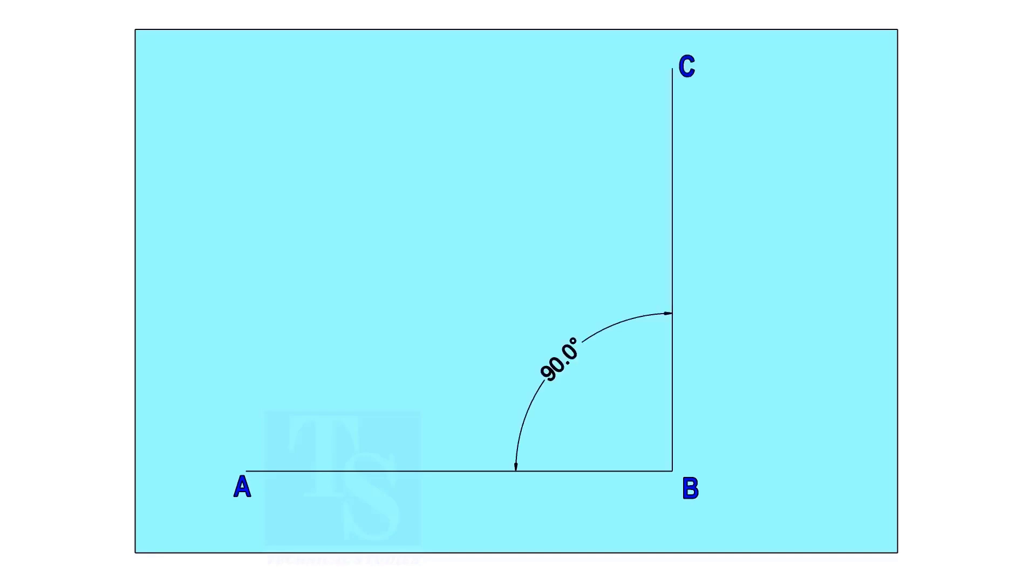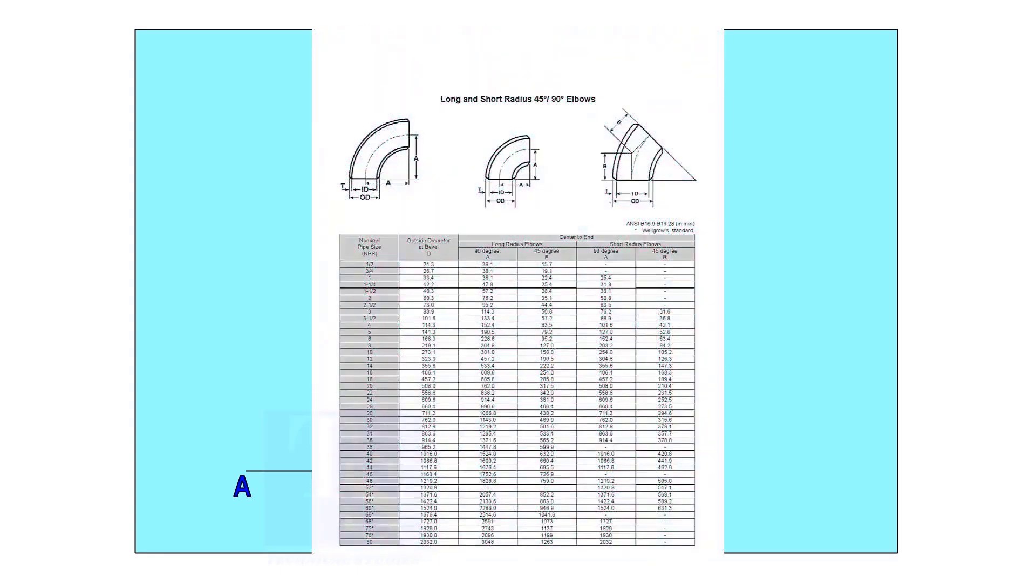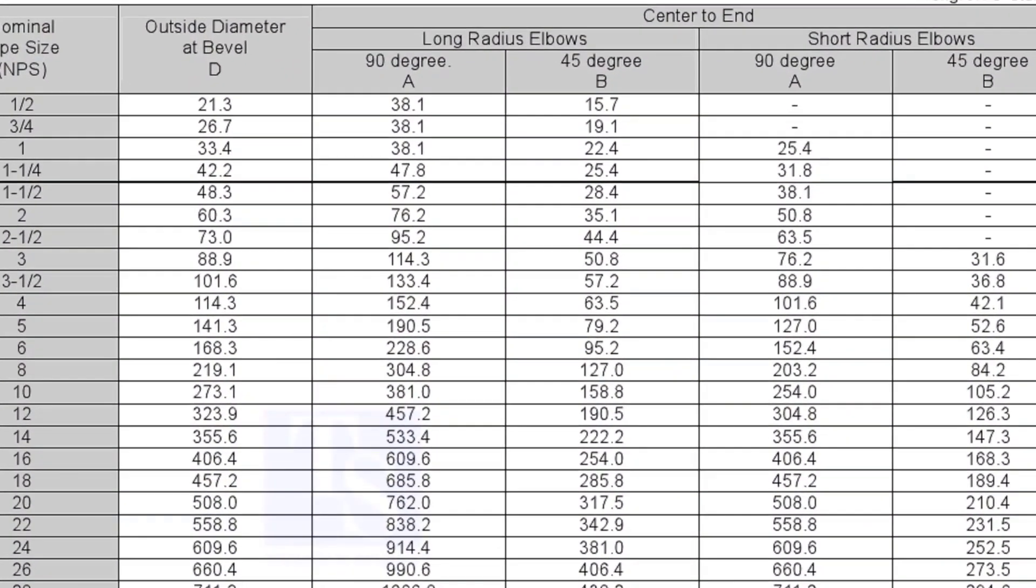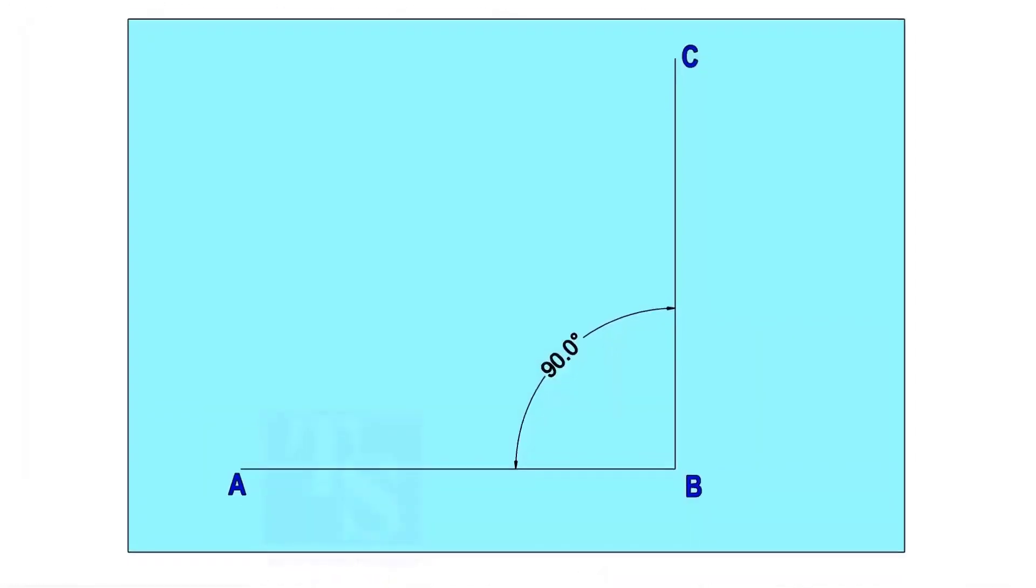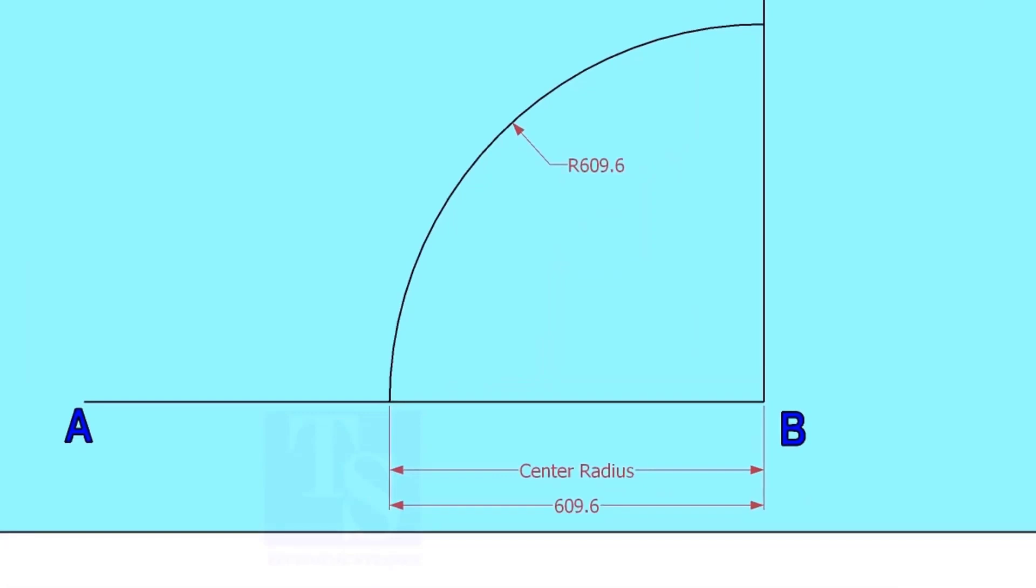Mark line AB and a perpendicular line BC. Let us check the center radius of 16-inch long radius elbow. Draw an arc with the center radius 609.6 millimeters.